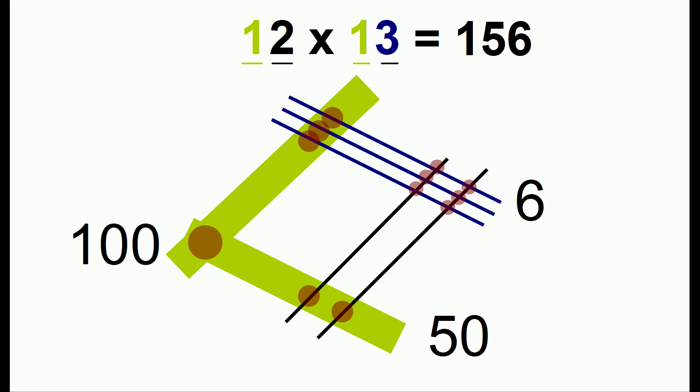So the first thing we can do is we can remove the labels on the 10. We will just keep in mind that the intersection of a thick line and a thin line is 10.